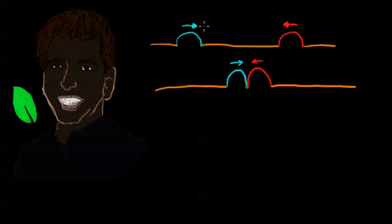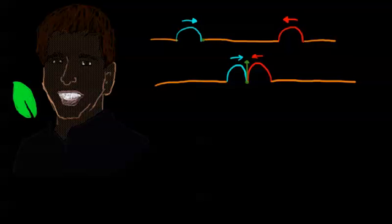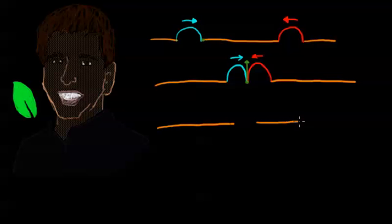Once it goes up it'll pull the string to the right of it up, and that's how the wave moves along — pieces of string pull each other upward in succession. For this piece of string in the middle, it not only feels the string to the left of it pulling up, but also the piece to the right pulling it up, so it gets pulled up twice as hard. When these waves have completely interacted, we end up with a bigger bump.